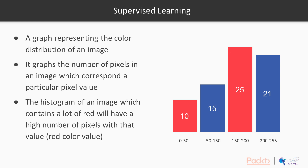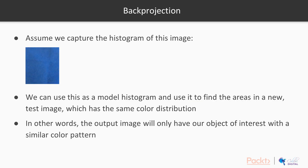These ranges of pixel values are called bins and are adjustable by the user. This histogram in particular has 4 bins. This graph captures the entire color information in the image. Assume we capture the histogram of this image which is completely blue in color. We can use this as a model histogram and use it to find areas in a new test image which has the same color distribution. In other words, the output image will only have our object of interest with that similar color pattern.